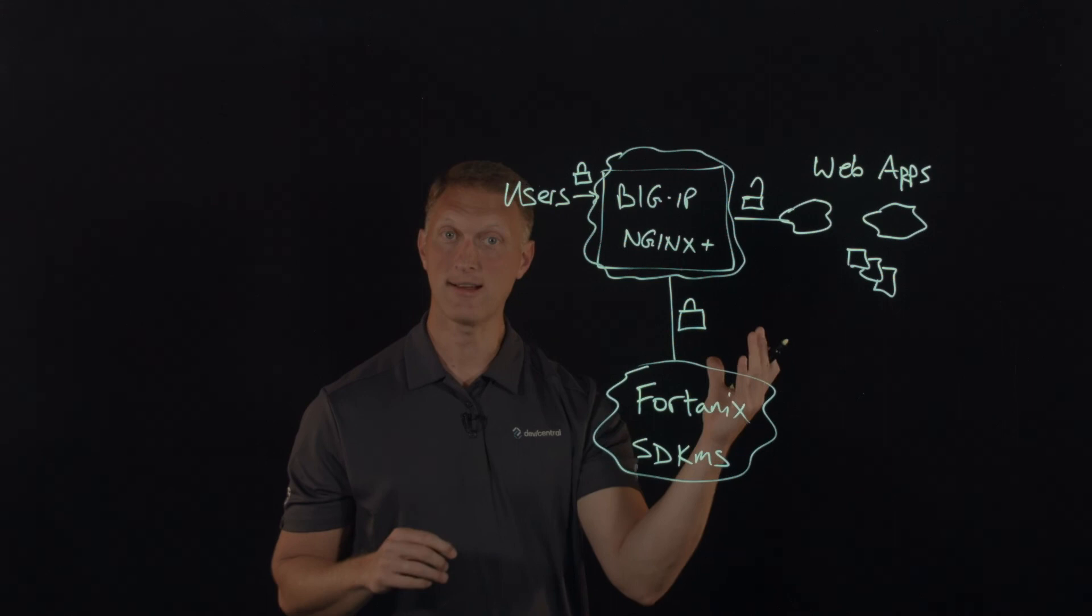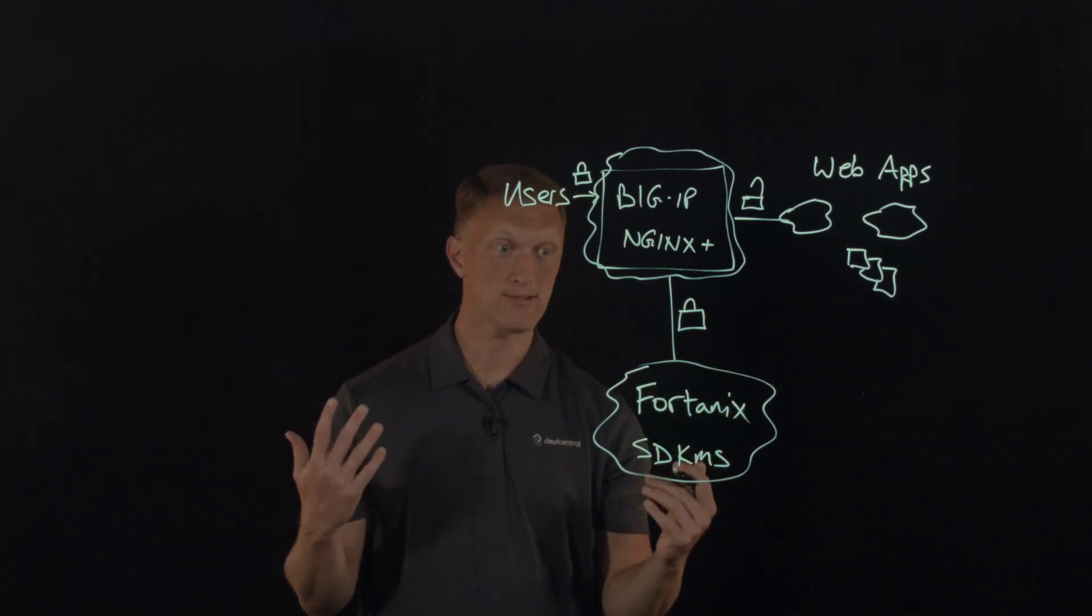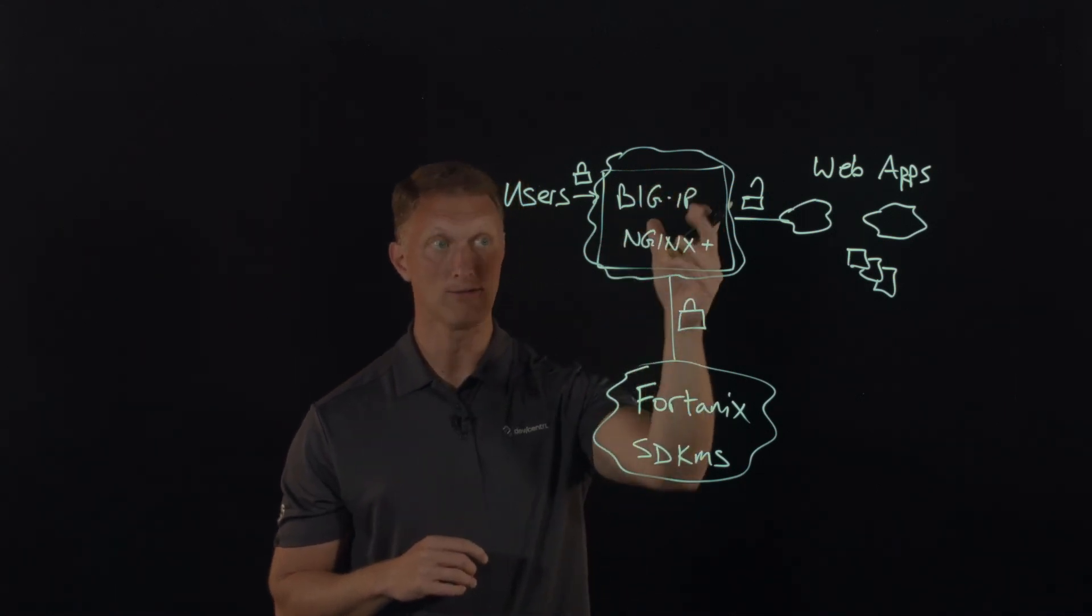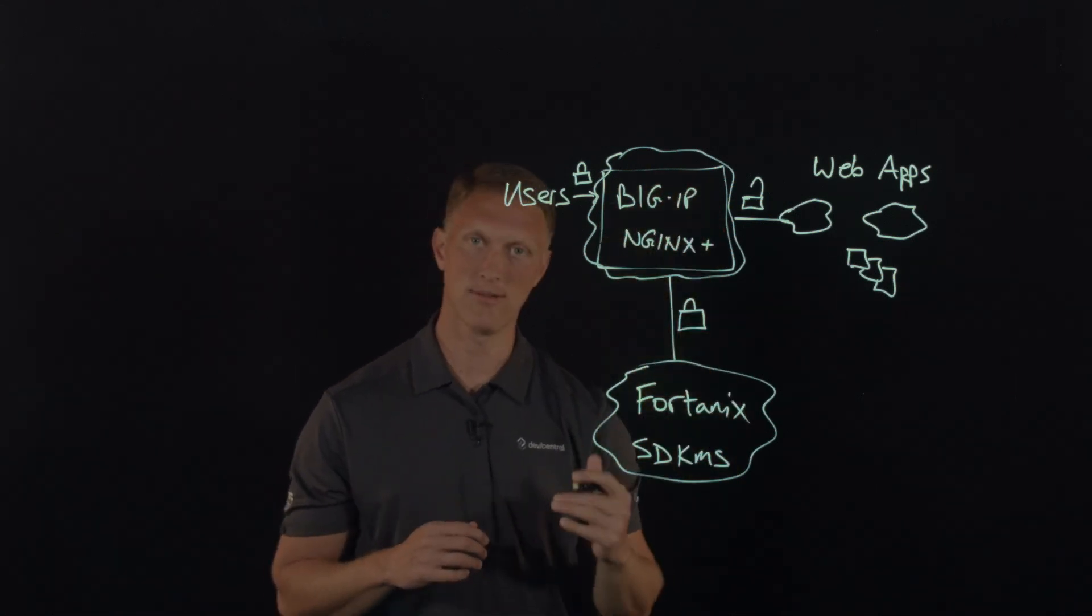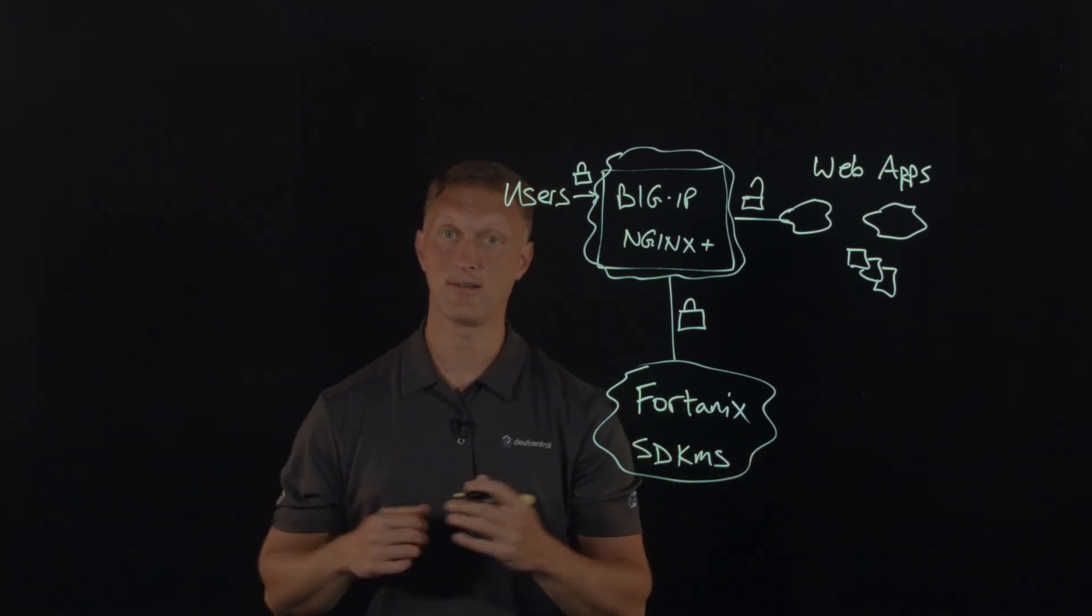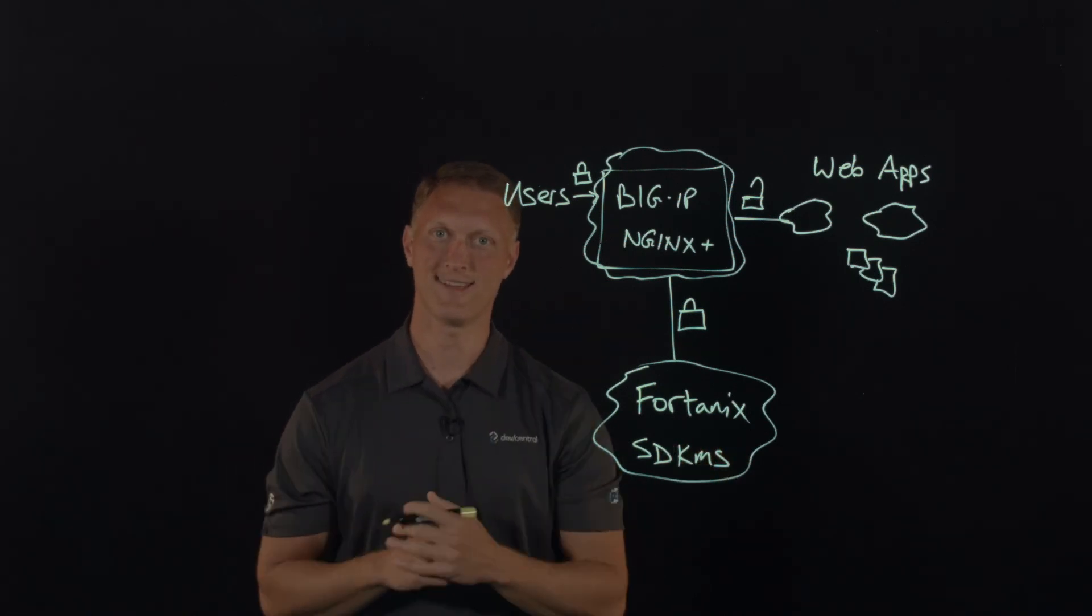So this checks all the boxes. So now you can have all those things that you were looking for before that you may not have thought were possible. Suddenly now they are possible with the Fortanix SDKMS solution here with either Big IP or NGINX plus. Like I said, you can use it with either one of those. So I hope you've learned a couple of things here with this lightboard lesson video. Hey, if you like this thing, you can click up here on our Dev Central logo and subscribe to our YouTube channel and we will see you guys out there in the community.